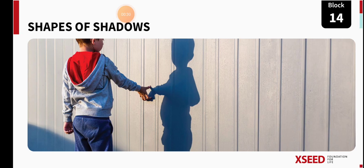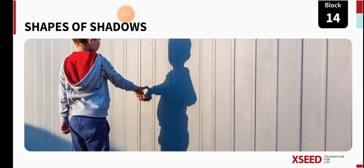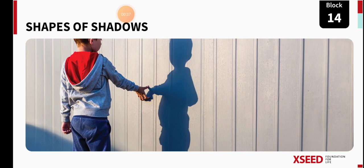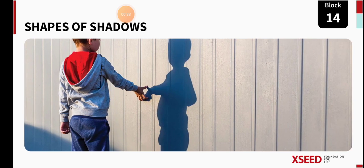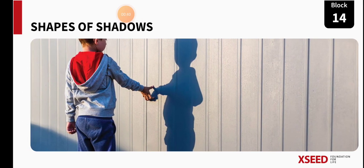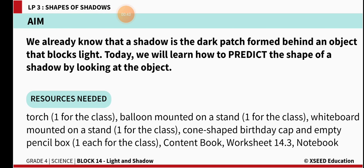Here you can see in the picture the image or the shadow of a boy. You can see how the shadow appears on the wall. Before learning this, we'll see the things which we need to do the activity.